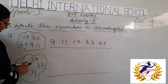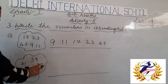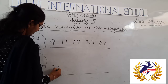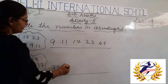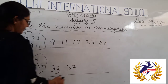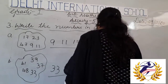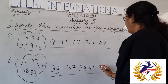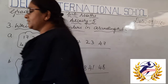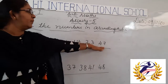Next, the given numbers are 39, 41, 48, 33, and 37. We arrange them from smaller to bigger: 33, then 37, then 39, then 41, then 48. This is how we arrange numbers in ascending order — smallest to biggest.